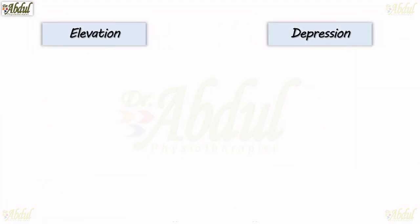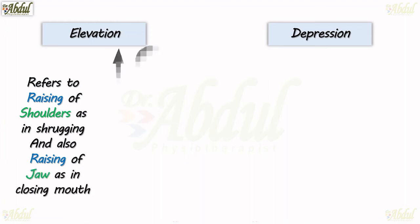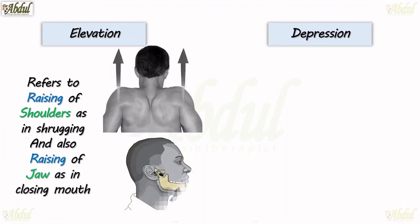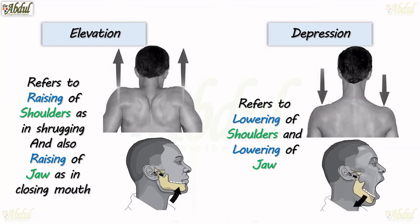Elevation and its antagonistic movement is depression. Elevation refers to a raising of the shoulders, as in shrugging, and also raising of the jaw, as in closing the mouth — something like this. Depression refers to a lowering of the shoulders and lowering of the jaw, something like this.